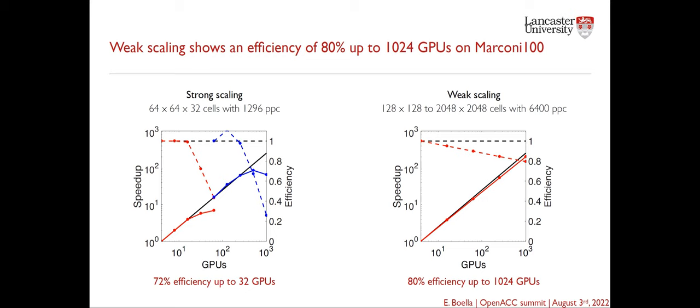We had to increase the problem size as efficiency dropped beyond 32 GPUs. In weak scaling tests, we reached an efficiency of 80% up to 1,024 GPUs across 128 nodes on Marconi 100. We are fairly happy with this result.